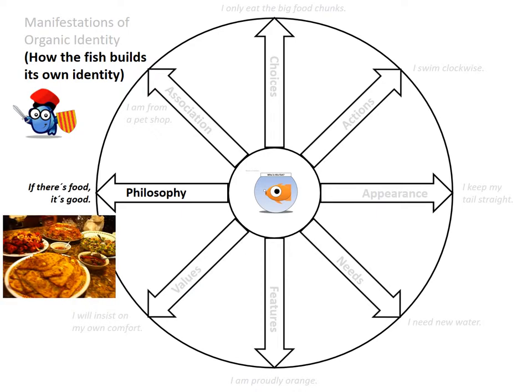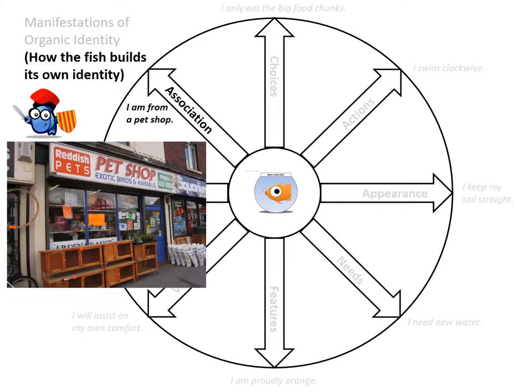And the goldfish may have a philosophy. The philosophy may be, if there is food, it's good. And maybe the goldfish knows that he comes from a bad shop. But I doubt it. Anyway, that would be the kind of association that the goldfish may have.